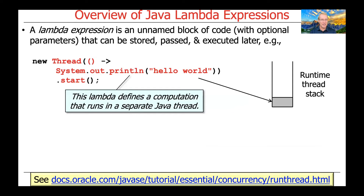This particular example defines a Lambda expression whose computation will run in a separate Java thread and print out the famous Hello World as an output string. As you can see, when we actually start this thread, it'll create a new runtime thread stack, and that's where the Lambda expression will be executed to perform the Hello World greeting.